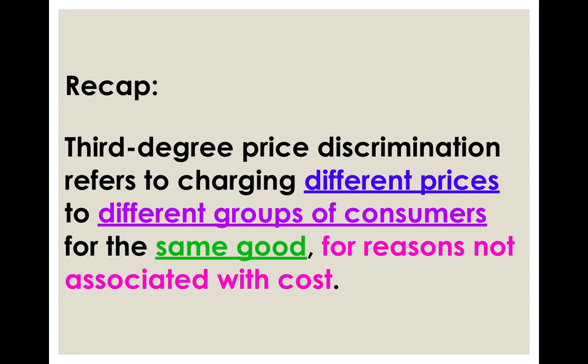Some common examples of third-degree price discrimination include cinema tickets, whereby for the same movie screening, student prices and adult prices can be vastly different. This is not because there's a difference in cost to Golden Village — they incur the same cost, yet still charge different prices. Adults usually pay a much higher price than students.